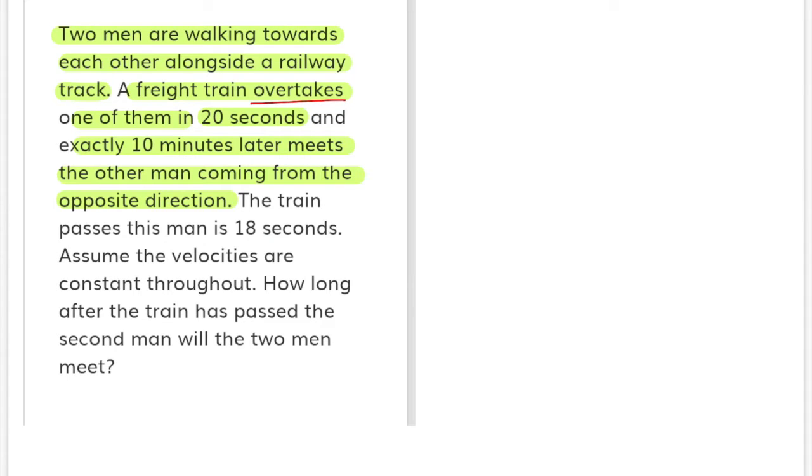In 20 seconds, the directions are the same. The other man coming from the opposite direction - the train passes him in 18 seconds. The word is 'pass'. Assume the velocities are constant throughout. How long after the train has passed the second man will the two men meet?